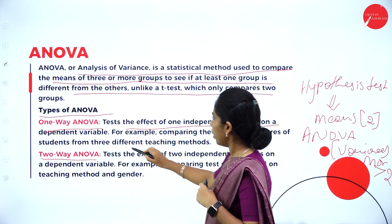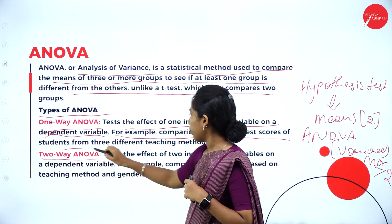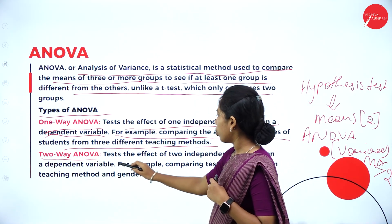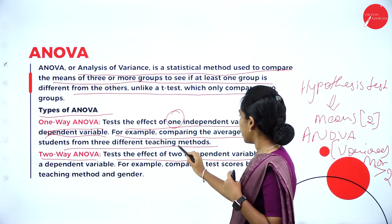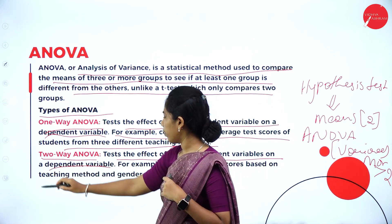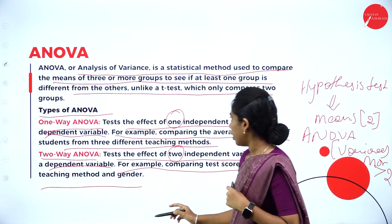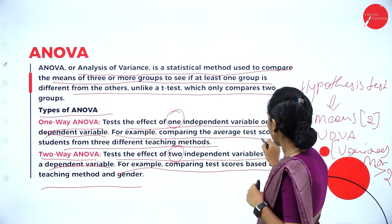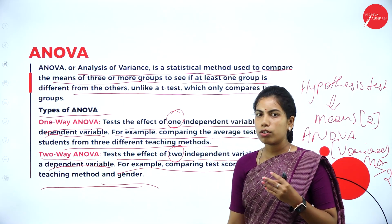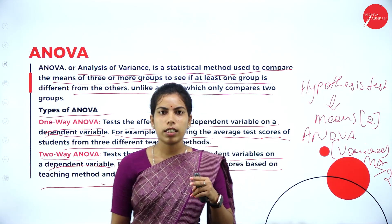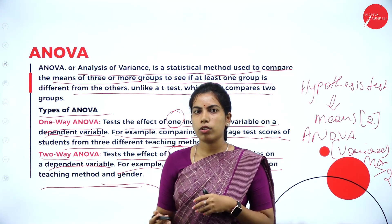One-way ANOVA tests the effect of one independent variable on a dependent variable — for example, comparing the average test scores of students from three different teaching methods. Two-way ANOVA tests the effect of two independent variables on a dependent variable — for example, comparing test scores based on both teaching method and gender. In one-way ANOVA we check only one independent variable, while two-way checks two factors.